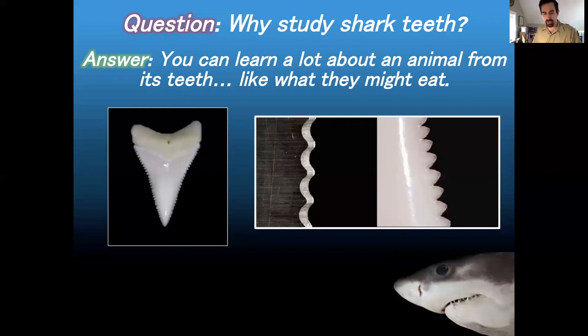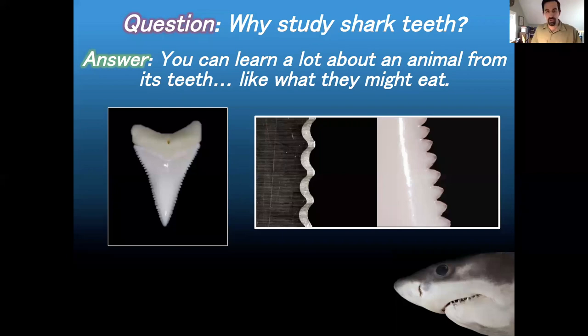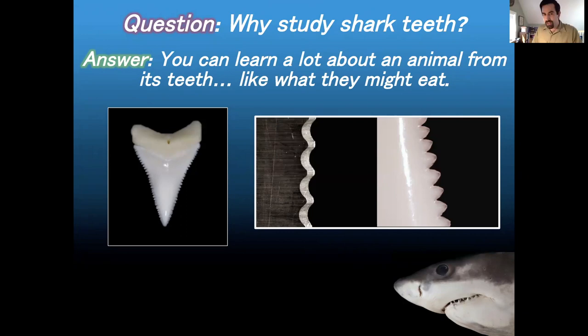If a tooth has serrations, that's a pretty good indicator that the shark wants to cut through something. Other times you can look at the overall shape of the tooth. On the left-hand side is a tiger shark tooth, and on the right is a picture of a can opener — the kind you might take camping. We use can openers to puncture something hard and then open it up. Tiger sharks are doing the same thing — their teeth are great for biting through the hard shells of sea turtles, which they love to eat.